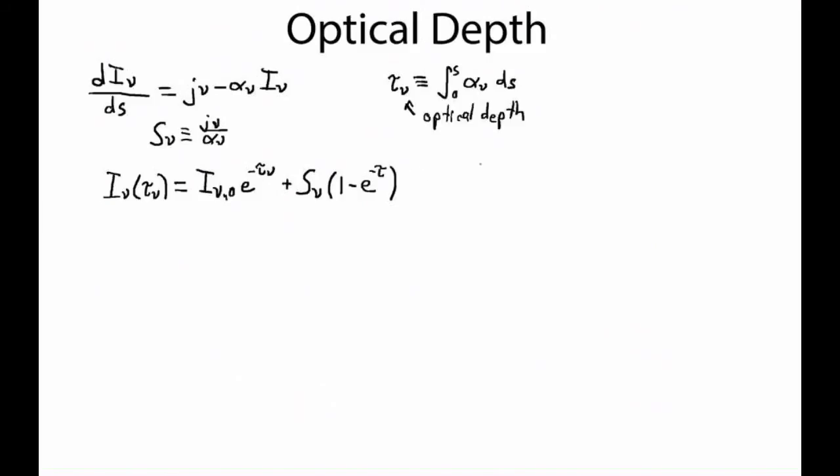We saw that there were two important limits of optical depth. There's when optical depth was much larger than one which we called optically thick, and in this limit we lose information about the background that gets attenuated away and our specific intensity that we observe asymptotes to the source function. And in the optically thin limit where the optical depth is much less than one, then we retain information about the background and the source function only changes that linearly with optical depth.